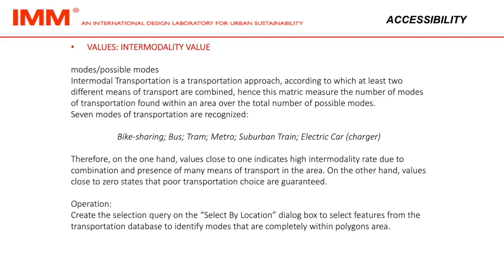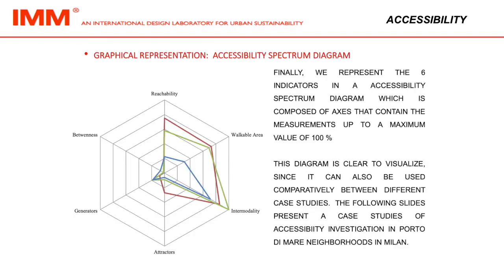Seven modes of transportation are recognized: bike sharing, bus, tram, metro, suburban train, electric car, and charger. Values close to 1 indicate a high intermodality rate due to the combined presence of many means of transport in the area. On the other hand, values close to 0 state that poor transportation choices are guaranteed. Create the selection query on the select by location dialog box to select features from the transportation database to identify modes that are completely within polygons area. Finally, we represent the six indicators in an accessibility spectrum diagram composed of axes containing measurements up to a maximum value of 100%. This diagram is clear to visualize and can also be used comparatively between different case studies.